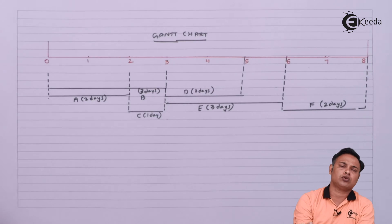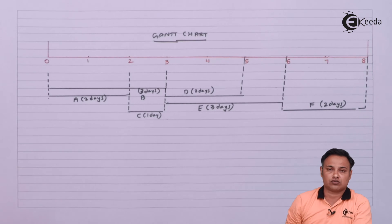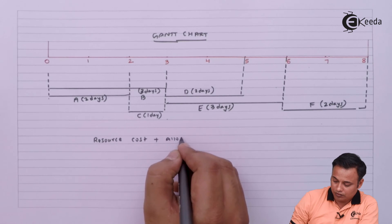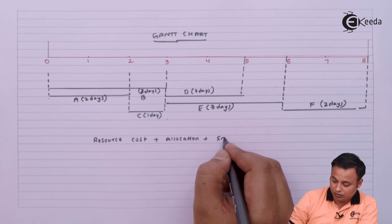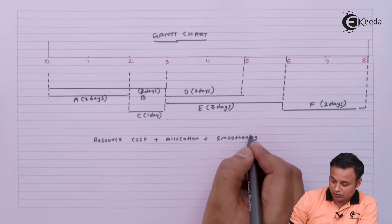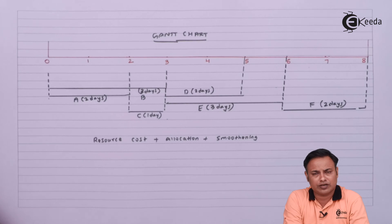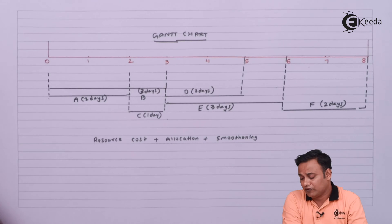Gantt chart might also be useful for calculating the cost of the resources - how much cost can be incurred on a particular day. Like you want to know how much I am going to incur on day five.